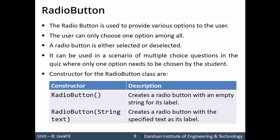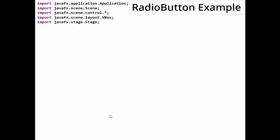The constructors for radio button are similar to checkboxes. An empty constructor with no parameter creates a radio button with an empty string label — only the radio button is visible. If you want to provide a string, it is passed as an argument to the constructor, and it creates a radio button with that text.